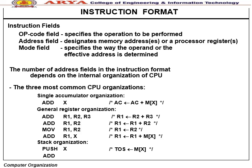Instruction format: The opcode field specifies the operation to perform; the address field designates a memory address or processor register; the mode field specifies how the operand or effective address is determined. The number of address fields depends on CPU organization. Three common CPU organizations: single accumulator (ADD X), general register (ADD R1,R2,R3), and stack organization (PUSH X, ADD).